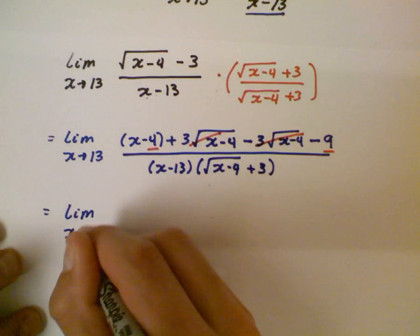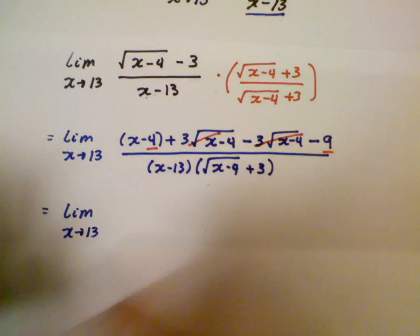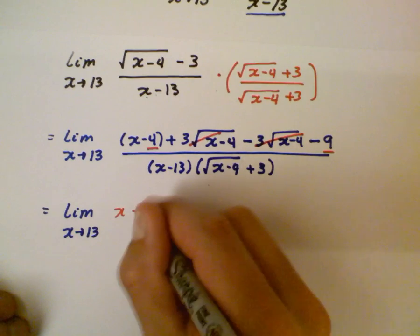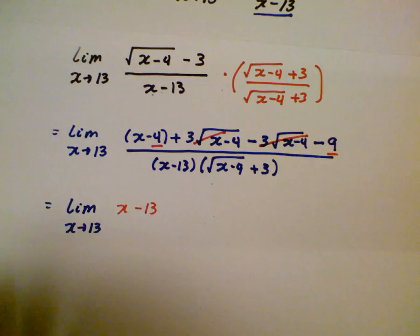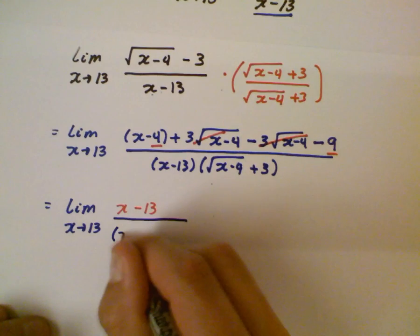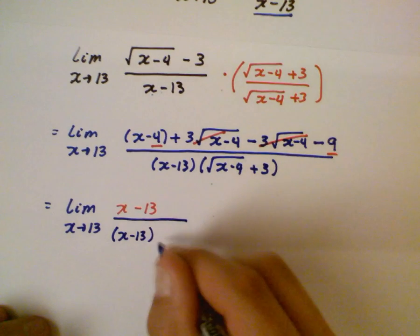So we have x is approaching 13 and then the numerator here is just going to be x minus 13 over I left the denominator. Now hopefully you can see why if you're a step ahead of me. Look what's going to happen with the x minus 13's.